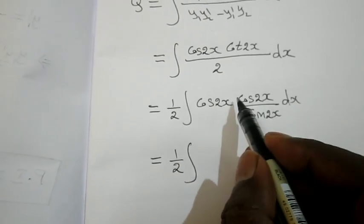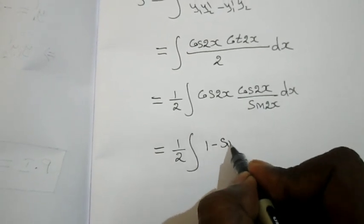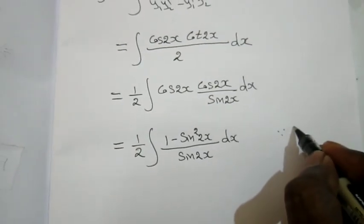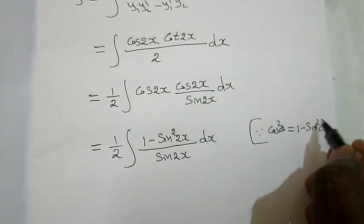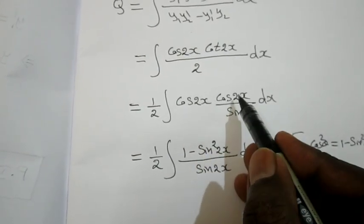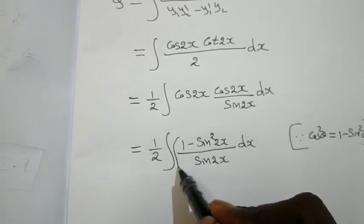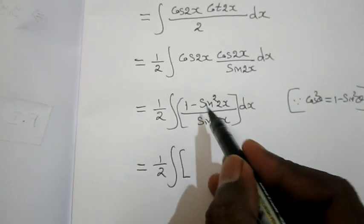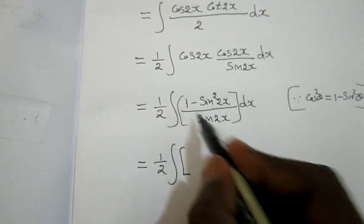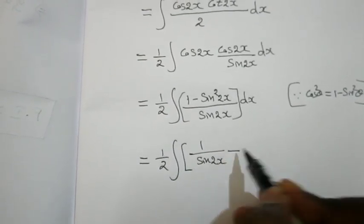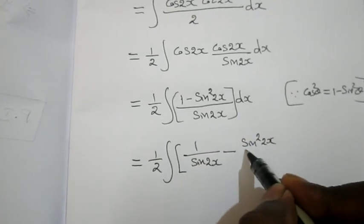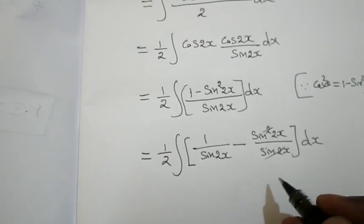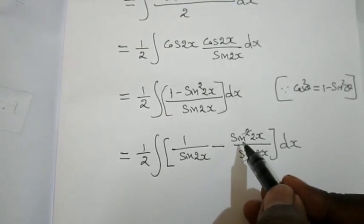To integrate, use the identity cos²2x = 1 - sin²2x. So cos²2x / sin 2x = (1 - sin²2x) / sin 2x. This splits into two parts: 1/sin 2x - sin²2x/sin 2x, which simplifies to cosec 2x - sin 2x.